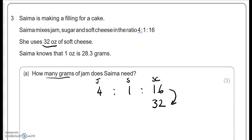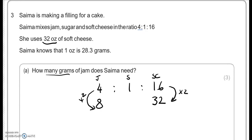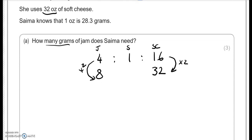So to get from 16 to 32 we just multiply by 2. So we're going to do the same thing for the jam. 4 times 2 equals 8, so 8 ounces of jam are needed. Now we're going to convert this into grams. So 1 ounce is equal to 28.3 grams. What about 8 ounces, how many grams will that be? So to get from 1 to 8 we multiply it by 8, we're going to do the same thing to 28.3 multiplied by 8 and that gives us 226.4 grams.